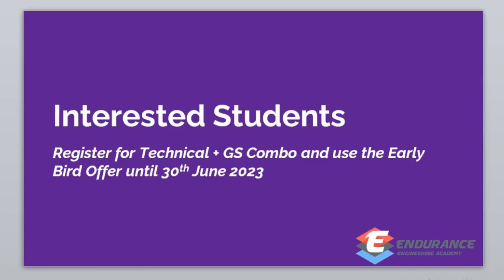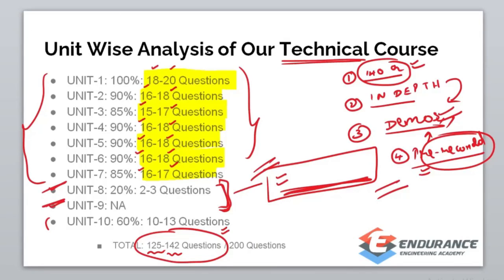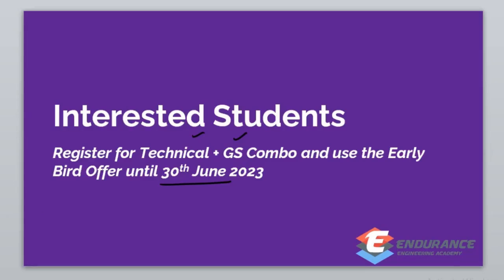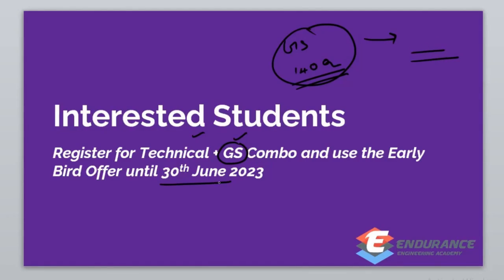For interested students — until June 30th, there is an early bird offer. Technical plus GS combined course is available. We will cover the complete Technical part guaranteeing 140 questions out of 200, and the complete GS course. The combo course is available at a special price. A registration link is in the description. For any queries, you can contact us — the contact number is provided. This is an online course, but if you are interested in an offline course, the institute is located in Chennai.